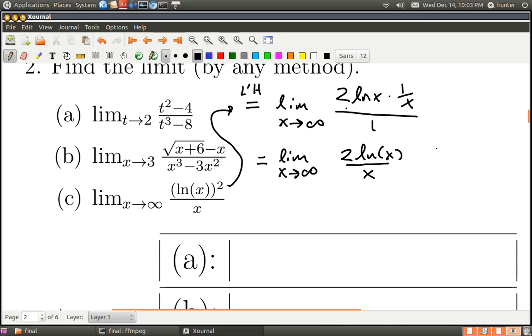Now, I have a limit of the form infinity over infinity. Hit it again with the rule of the Marquis de L'Hopital. And what happens? L'Hopital's rule. The limit as x goes to infinity. And on top, I get two times one over x. And on the bottom, it just dies. So this is what it is. And what is that? That is zero. Great.